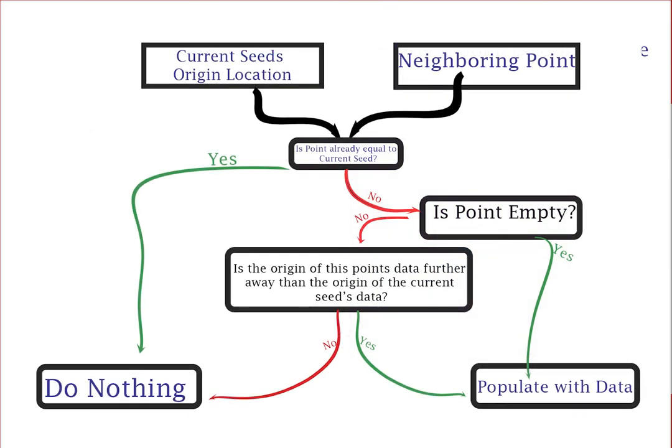First, if that location is already equal to the current seed, do nothing and just continue to the next neighboring point. If it's not equal, you should next check if it is empty or has not been filled with data yet. If this point is empty, you can fill it with this data and move on.